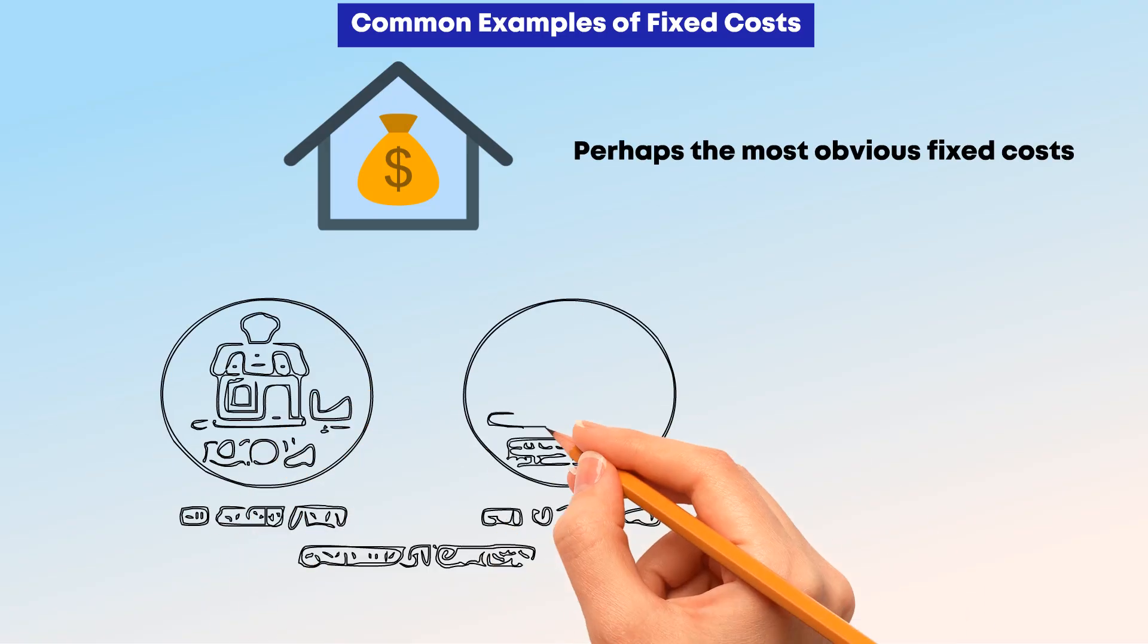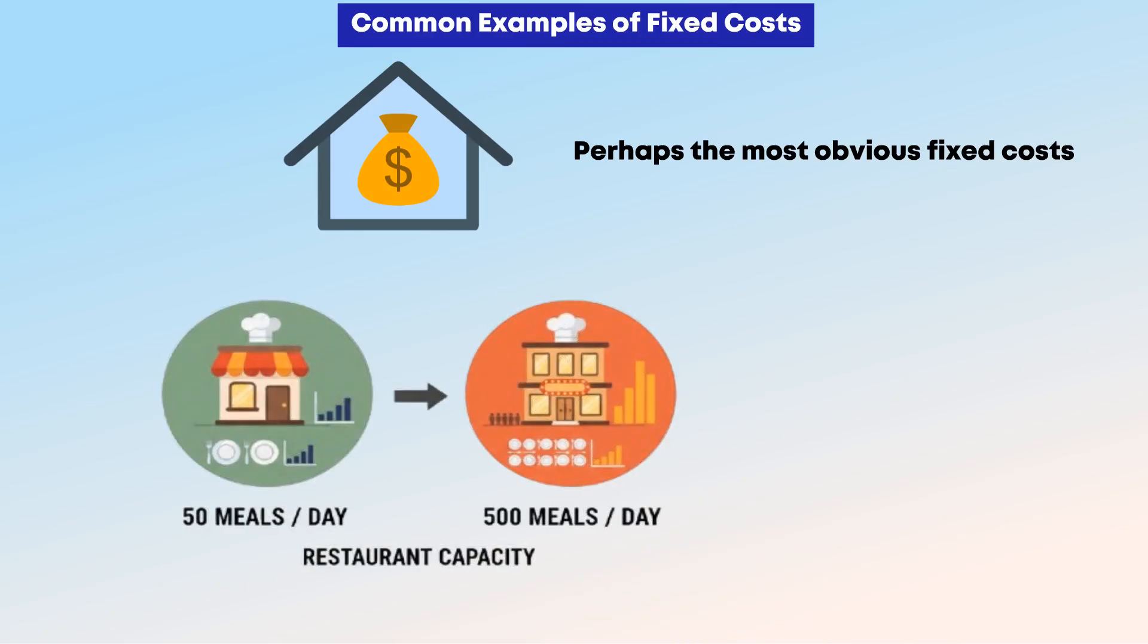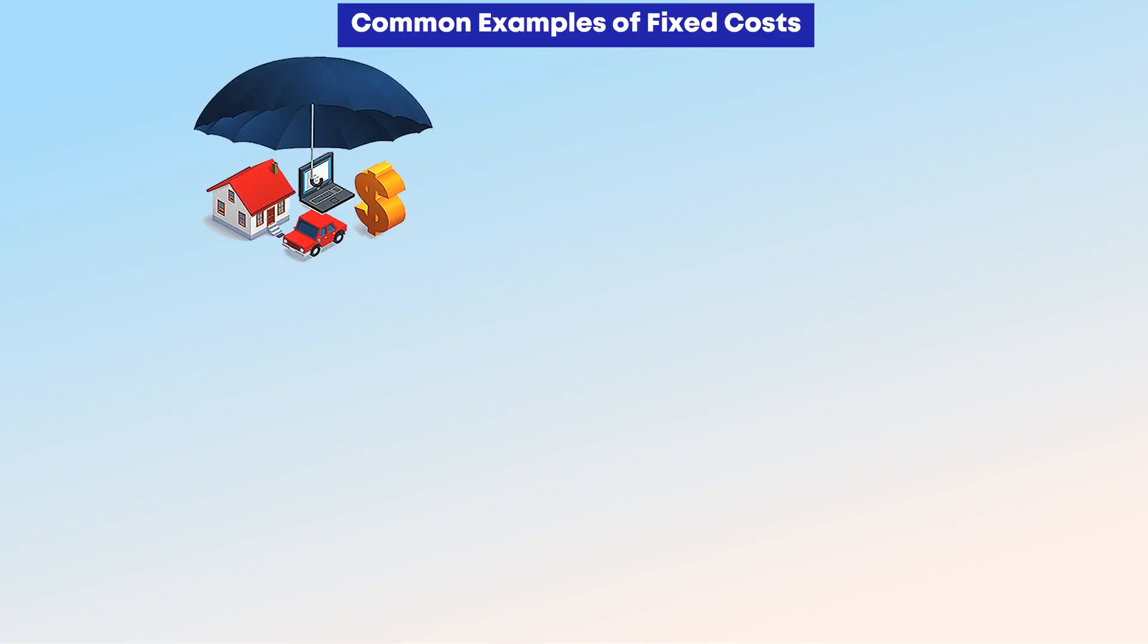Common examples of fixed costs: Rent or mortgage payments represent perhaps the most obvious fixed costs. Whether your restaurant serves 50 meals or 500 meals per day, the monthly rent remains the same. Insurance premiums follow a similar pattern, providing coverage regardless of production levels.